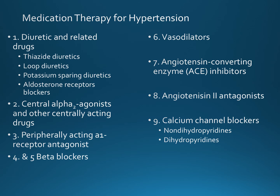ACE inhibitors inhibit angiotensin-converting enzyme, which is responsible for converting angiotensin-1, through the action of renin, to angiotensin-2. By inhibiting angiotensin-2, vasoconstriction is inhibited, the production of aldosterone is inhibited, and the end result is decreased blood volume, decreased preload, and decreased blood pressure.